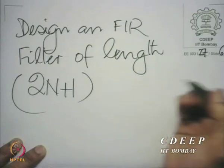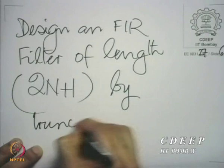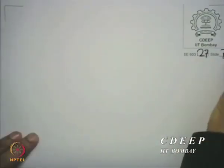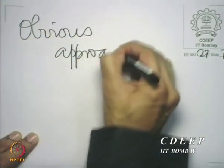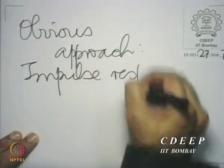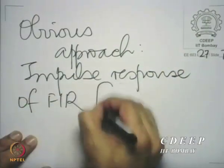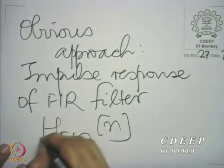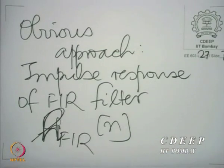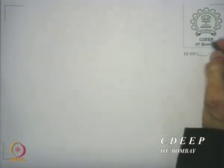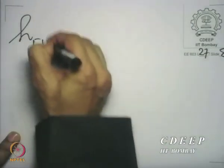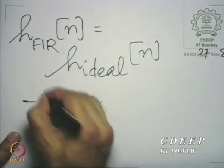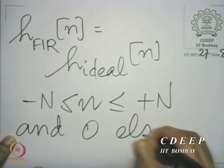We design an FIR filter of length 2N plus 1 by truncation. The obvious thing to do is to define the impulse response of the FIR filter — we call it small h, using small h because we are using capital H for the frequency responses. So h_FIR(n) equals h_ideal(n) for n between minus capital N and plus capital N, and 0 elsewhere. That is the obvious way to do it.